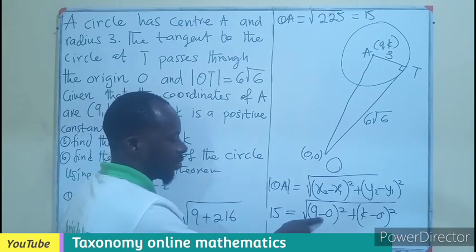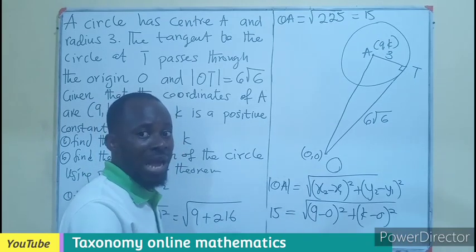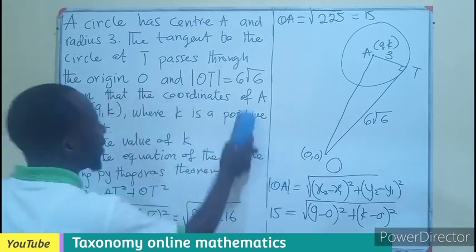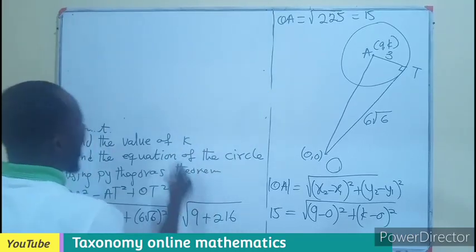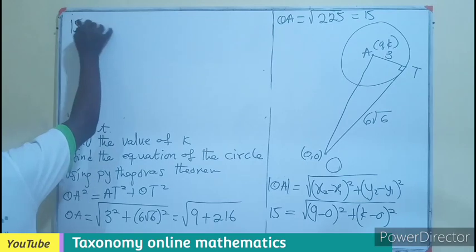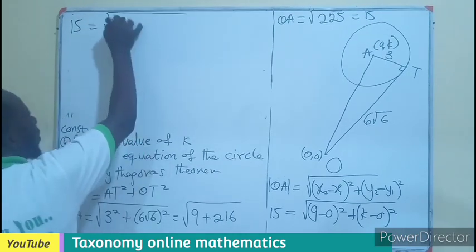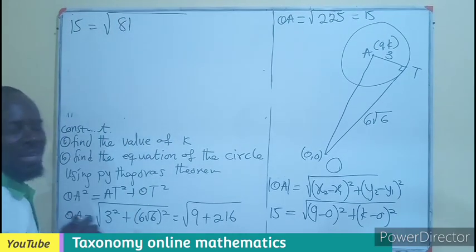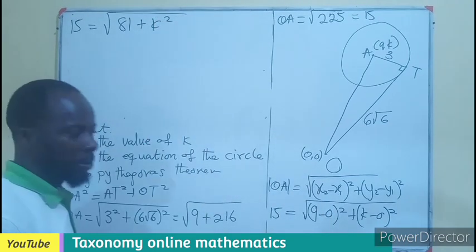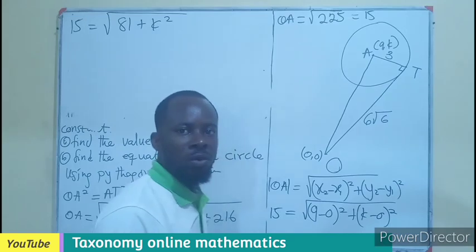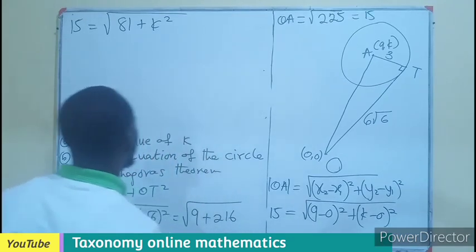We know that 0 subtracting from 9 will still remain to become 9. So in this case, we'll be having 15 equals to the square root of 81, which is 9 squared, plus K squared. You know, K minus 0 is also K, so that will become K squared.